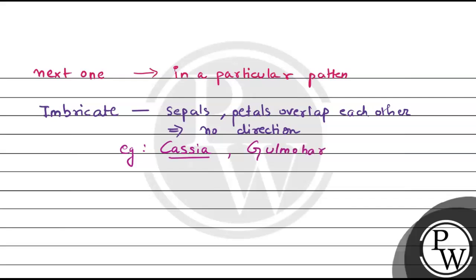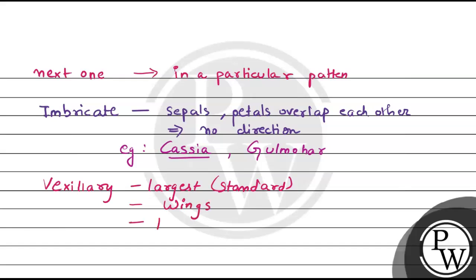The fourth type is vexillary aestivation. Here we get a standard petal which is the largest, then two lateral petals called wings, and then two smallest anterior petals called the keel. This arrangement is typically found in the Papilionaceae family.